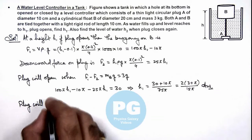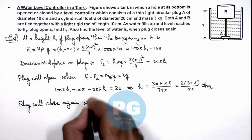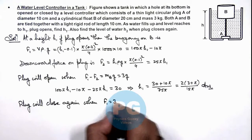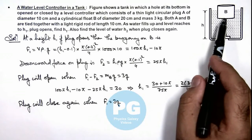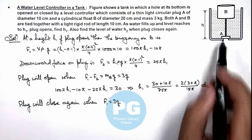will close again when F₁ equals 3g. When the buoyant force acting on B equals the weight of B, then it will be closing down.